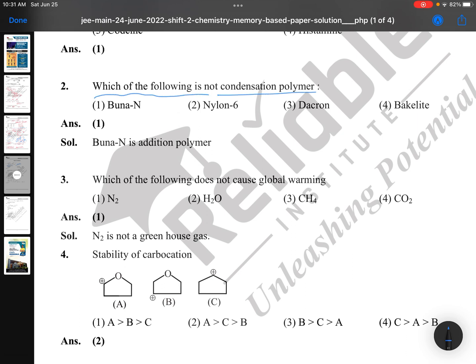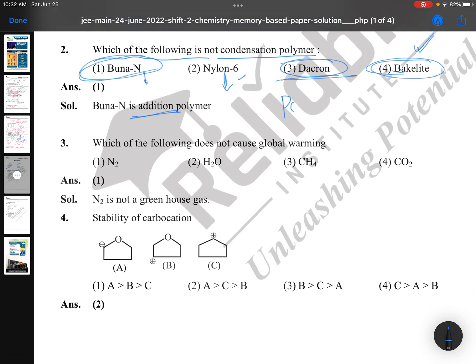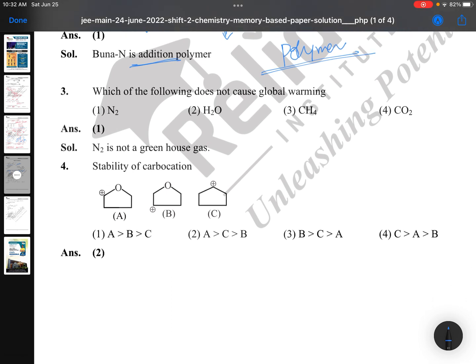Which of the following is not a condensation polymer? Buna-N is an addition polymer. Nylon-6 is from caprolactam, condensation polymer. Dacron is an ester, and Bakelite comes from phenol and formaldehyde. This is also a very regular question. Polymers, not a tough question, easy question only. Overall till now, no question requires thinking long. Chemistry is definitely easy in paper one as well as paper two. Which of the following does not cause global warming? Very simple question: by seeing options you can say nitrogen. Nitrogen is present in our air, it's not causing any global warming. The easiest question, a seventh-standard student can answer this.